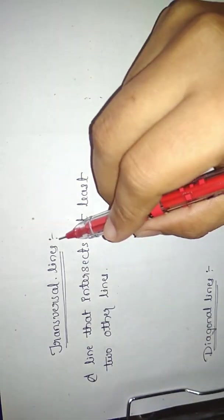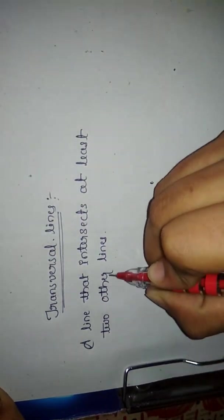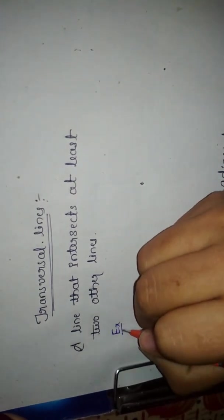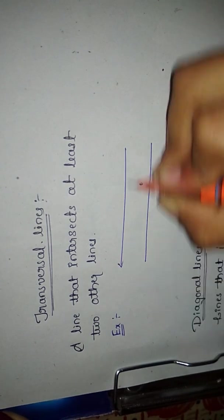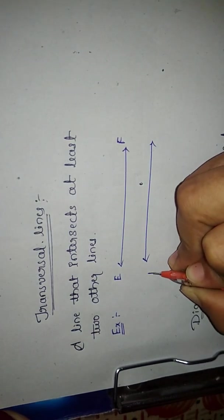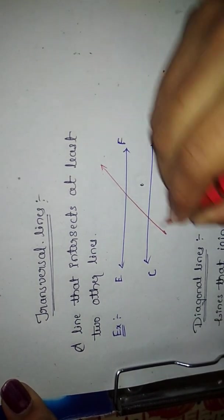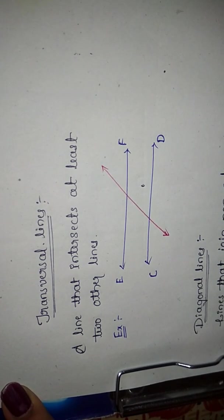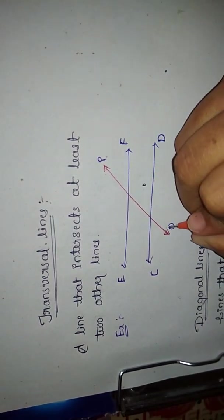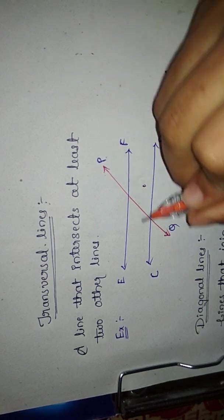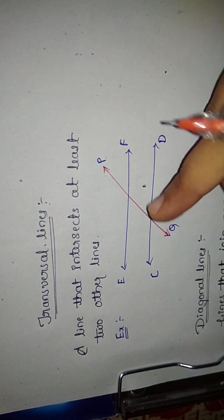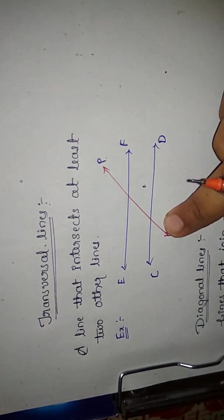After perpendicular lines, there are some more types: transversal lines and diagonal lines. A transversal is a line that intersects at least two other lines. For example, if I take two lines EF and CD, and draw one line PQ which is intersecting both of them, this red line PQ is called the transversal line. A line that intersects two or more lines is called a transversal line.